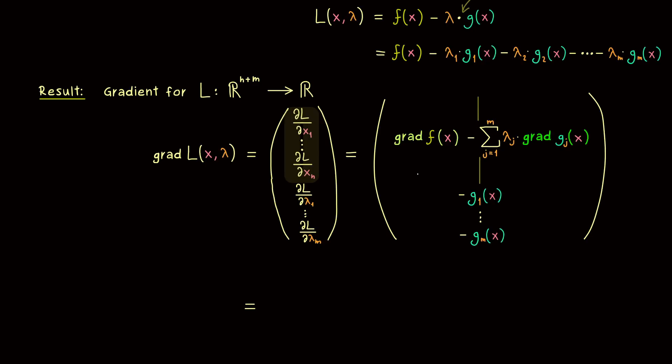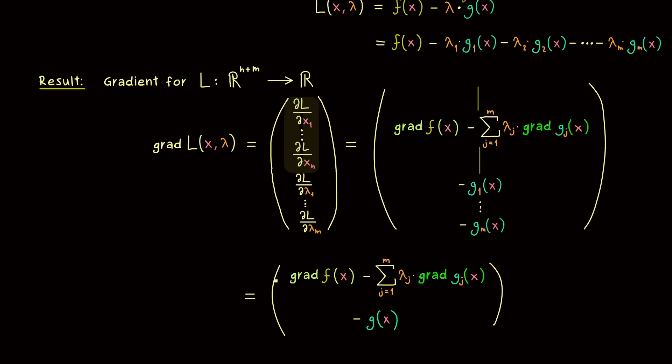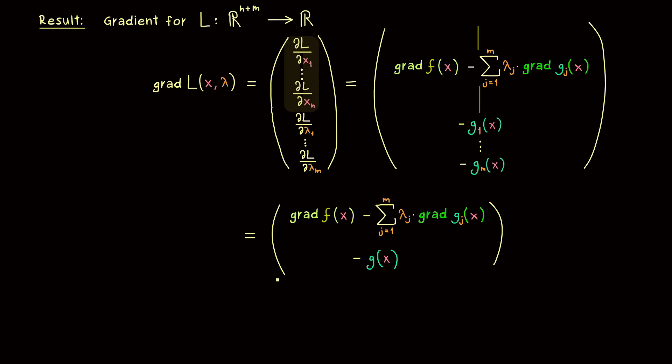In the next step, we say that we have the first and second entry. With these two essential parts, the gradient is easy to read. Moreover, the whole gradient of L vanishes if these two vectors vanish. And there we already have it: this is the reformulation of the method of Lagrange multipliers.